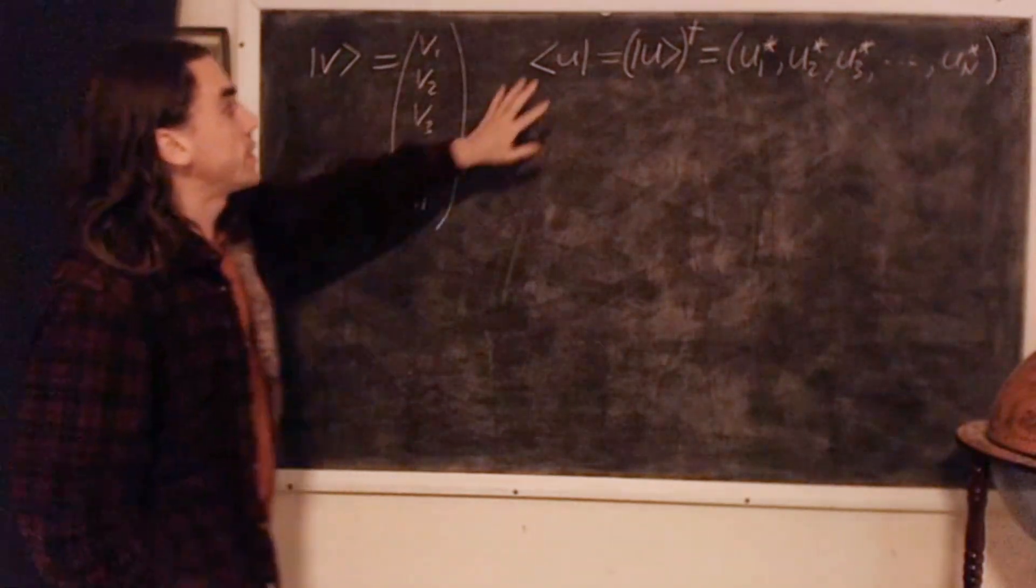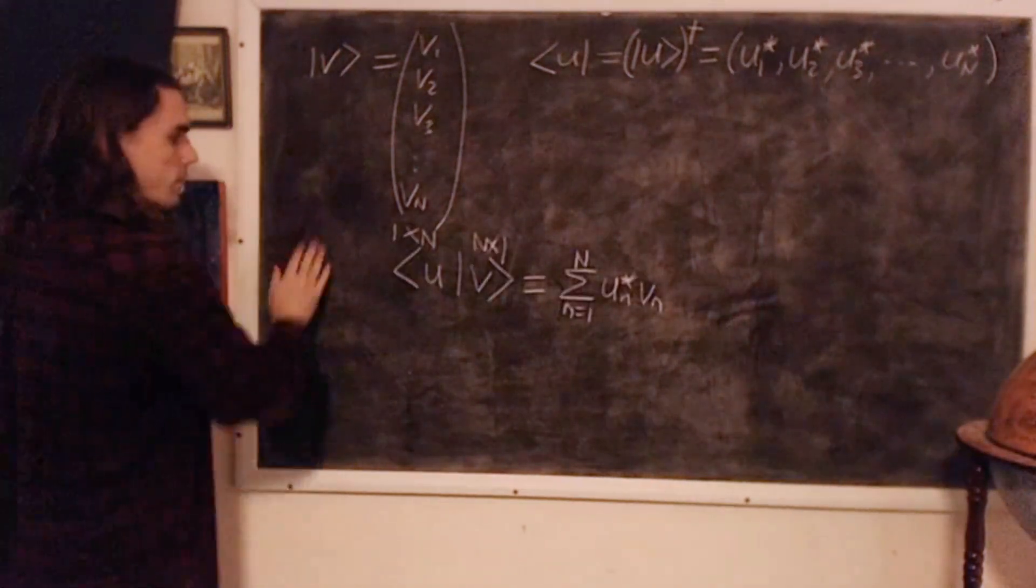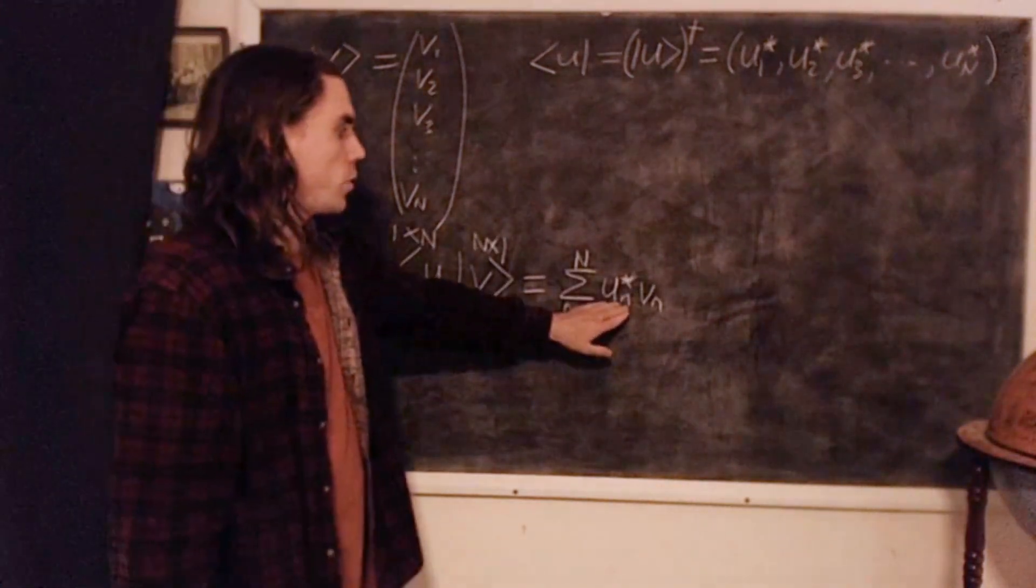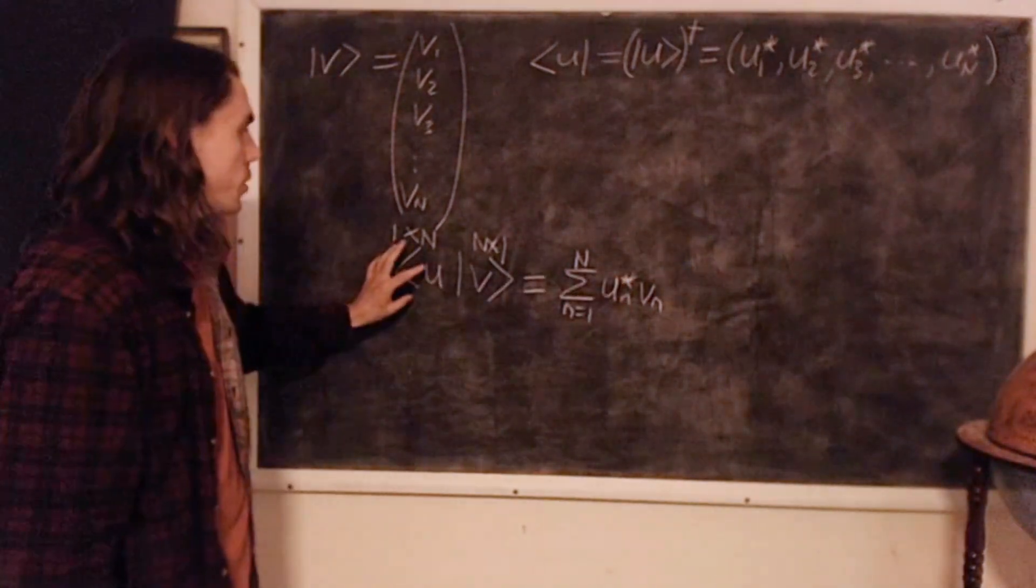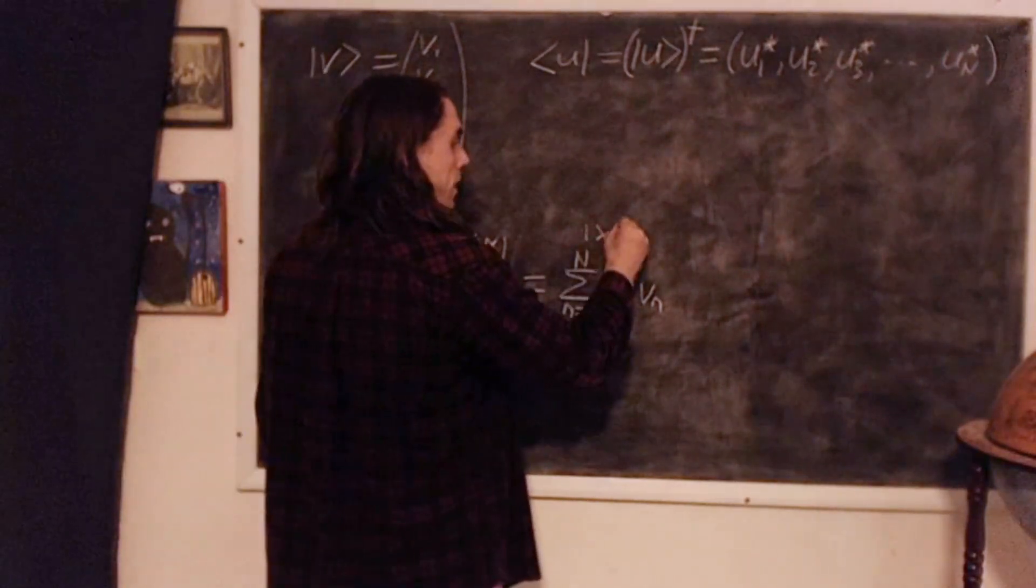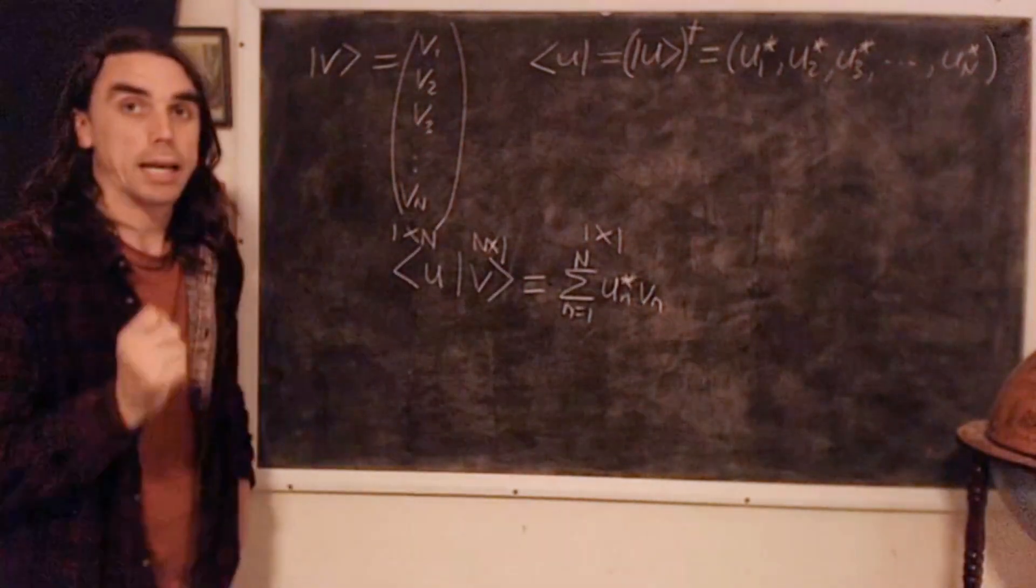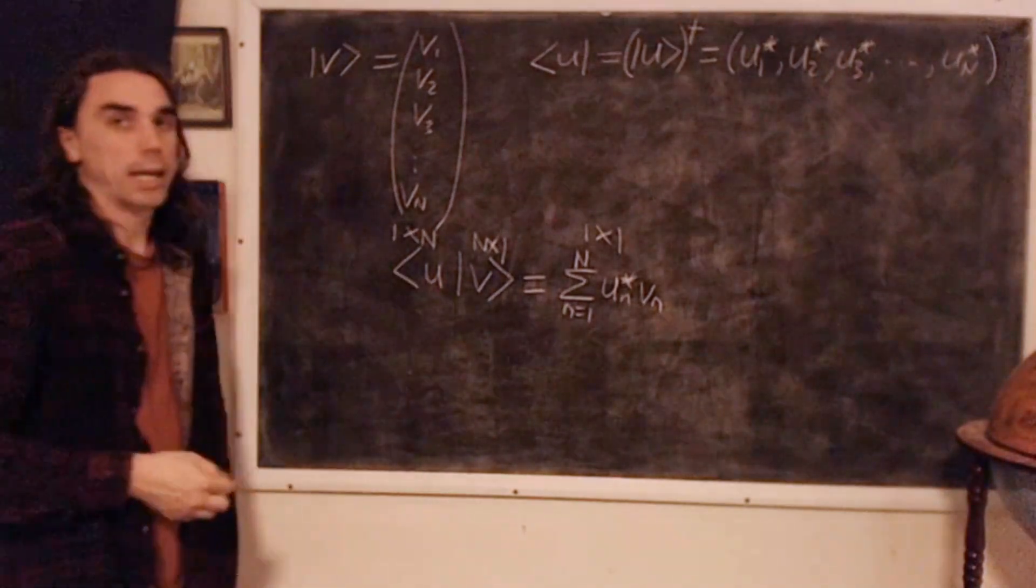And so when we place u to the left of v, we have the following. So the sum of un star vn, so the elements, we've taken the complex conjugate of this one, and the result here must be a 1 by 1 matrix, which is just a complex scalar. So the bracket forms complex scalars.